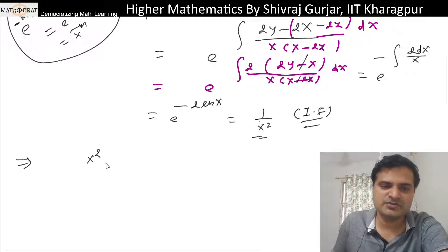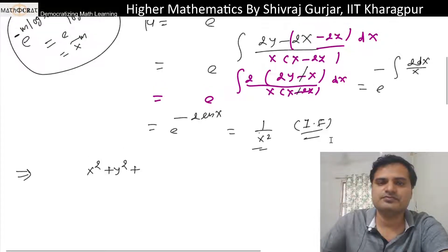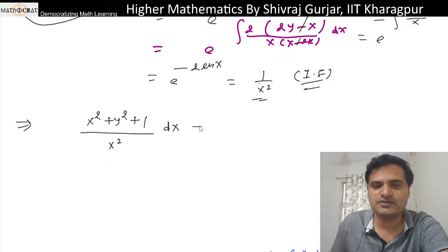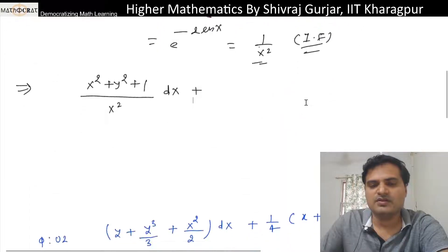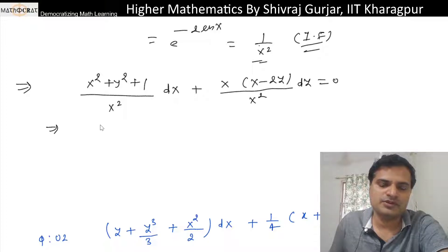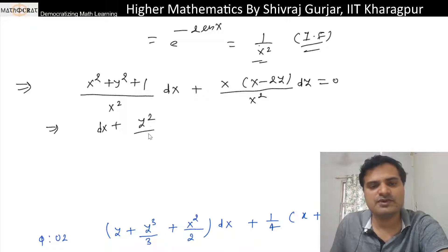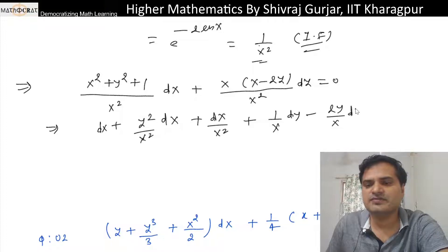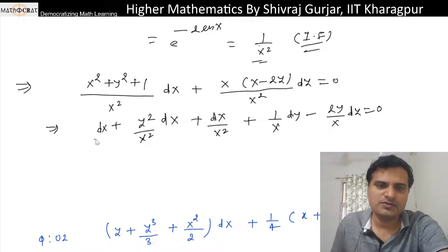Now multiply the differential equation throughout by the integrating factor 1/x squared. So the equation becomes (x to the 4 plus y to the 4 plus 1) divided by x squared dx plus x(x minus 2y) divided by x squared dy equals zero. Simplifying: this gives terms including 1/x minus 2y/x dy.